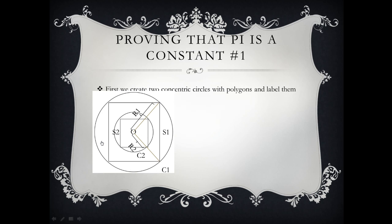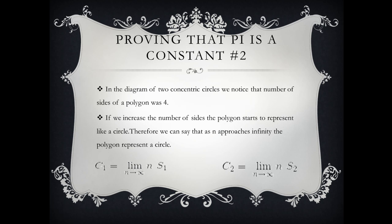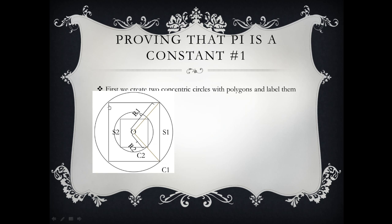Then we start proving that Pi is a constant. Step one is we create two concentric circles with polygons and label them. So over here we have two concentric circles and then we have just labeled them. We notice that the number of sides of the polygon was four.